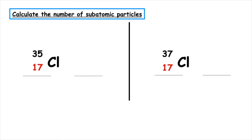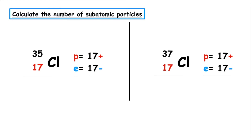Let's calculate the number of subatomic particles in these two nuclide notations of chlorine atoms. We can see that they have the atomic number 17, so they've got 17 protons, which are positively charged. As there is no positive or negative on the nuclide notation, they're classed as atoms, so they have 17 electrons. The first one has 18 neutrons, and the second has 20 neutrons.